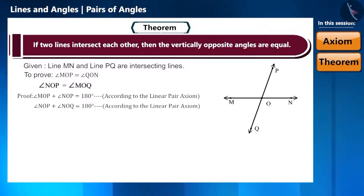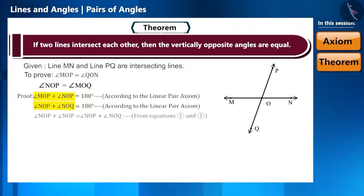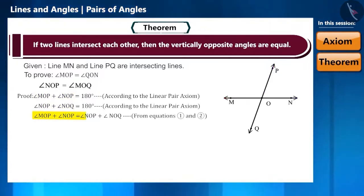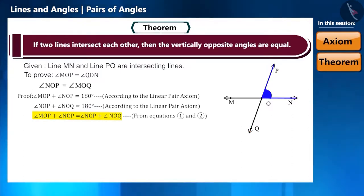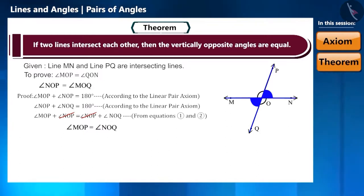If we pay attention to both equations, the right-hand side is equal, so the left-hand side will also be equal. That is, angle MOP plus angle NOP equals angle NOP plus angle NOQ. Since angle NOP is the same on both sides, cancelling it from both sides gives us angle MOP equals angle NOQ. Similarly, we can also prove angle MOQ equals angle NOP.